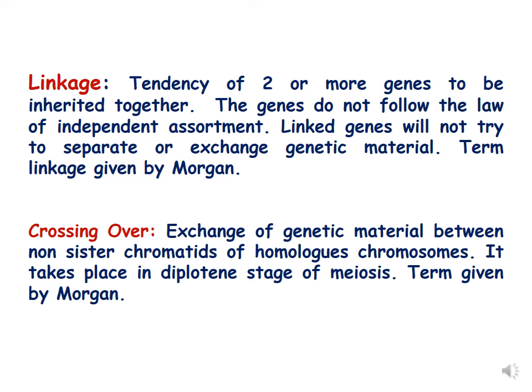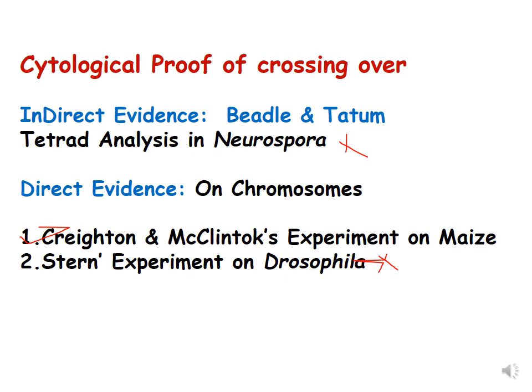Crossing over is the exchange of genetic material between non-sister chromatids of homologous chromosomes. This is the definition of crossing over, and it takes place during the diplotene stage of meiosis. The term crossing over was also given by Morgan.